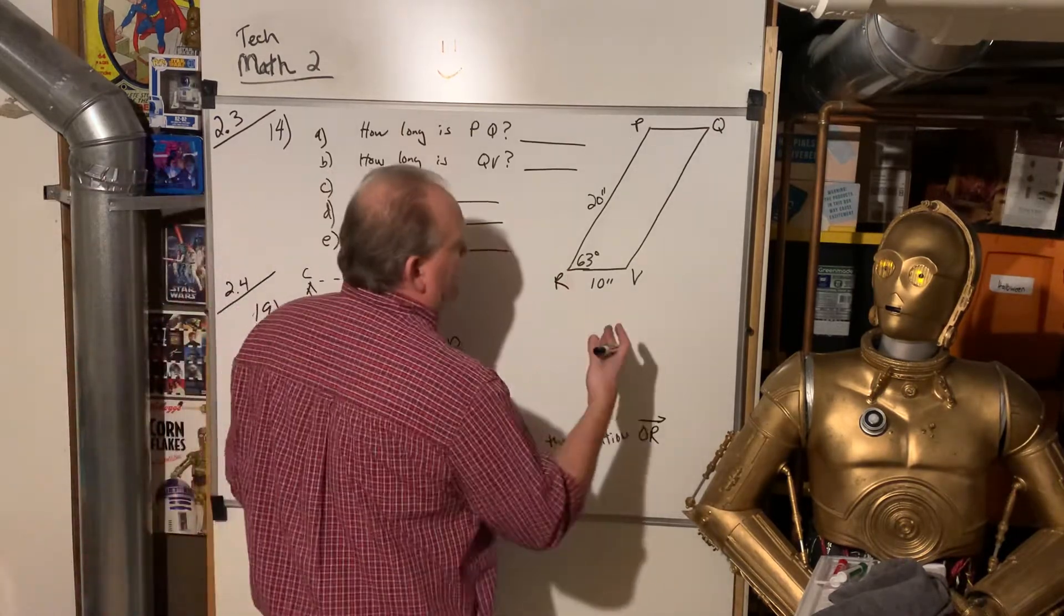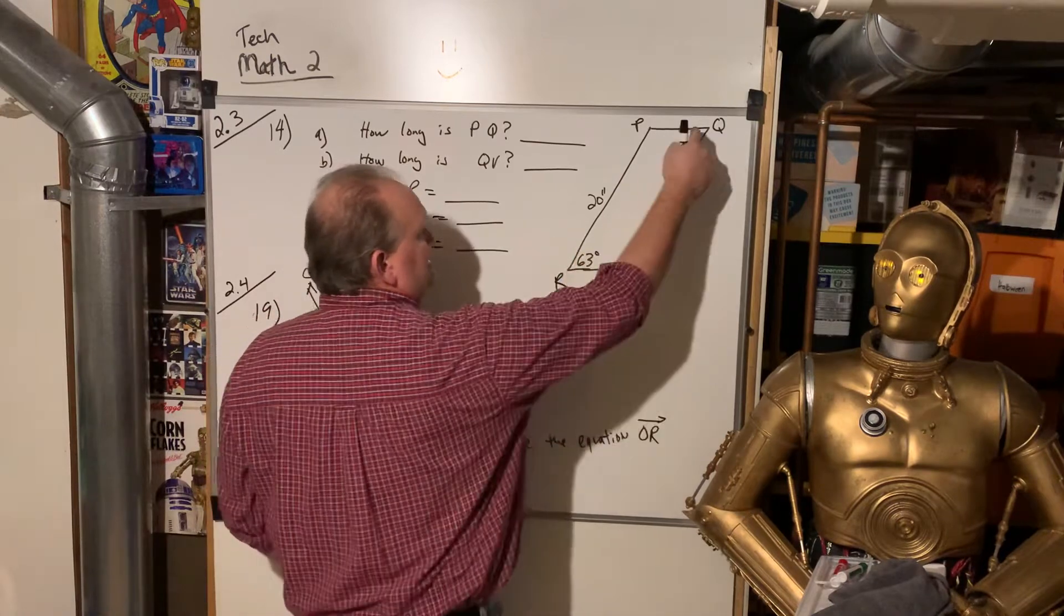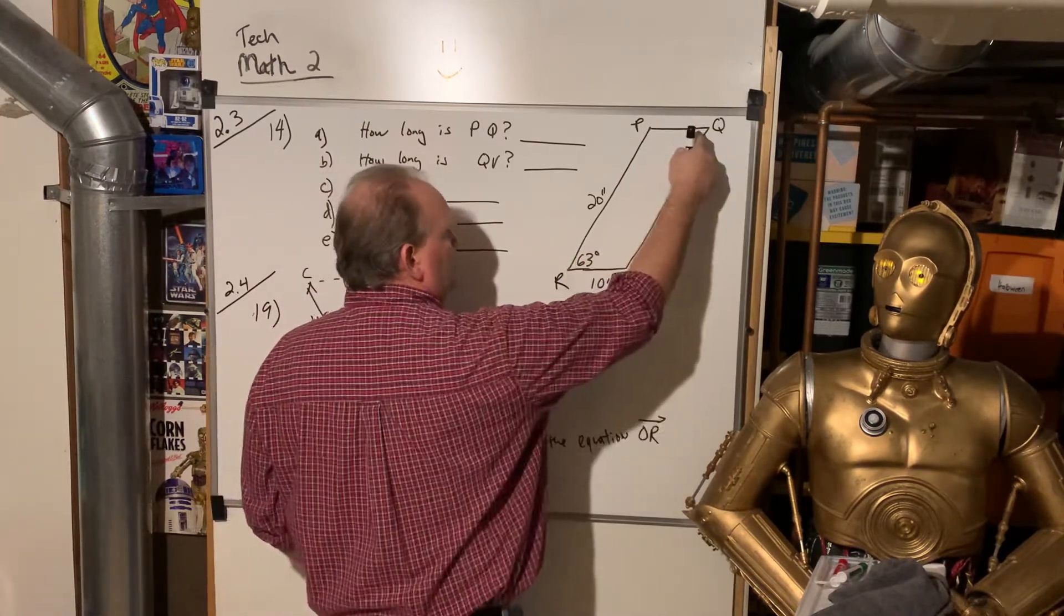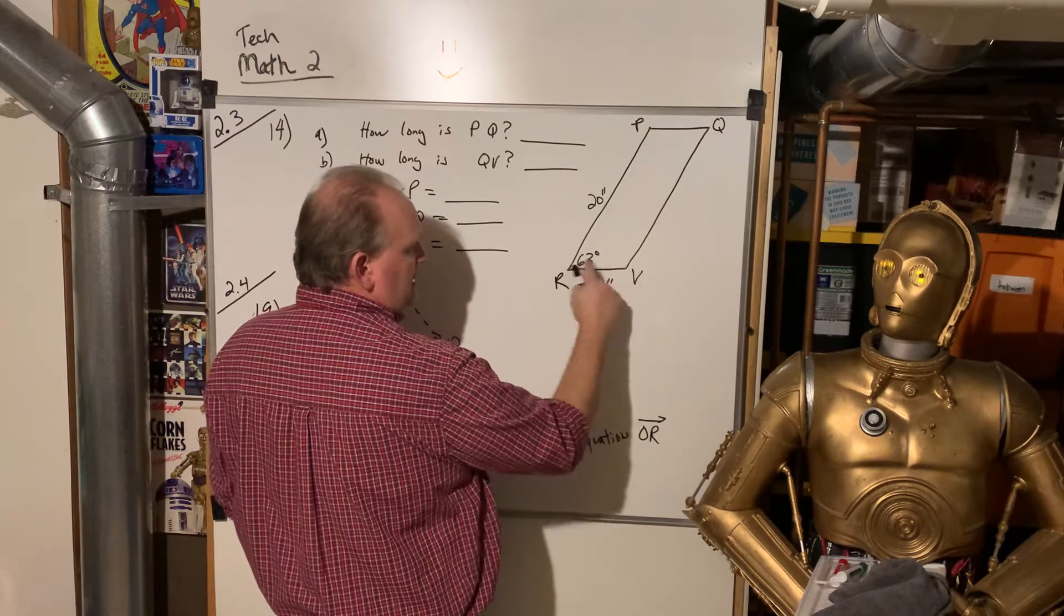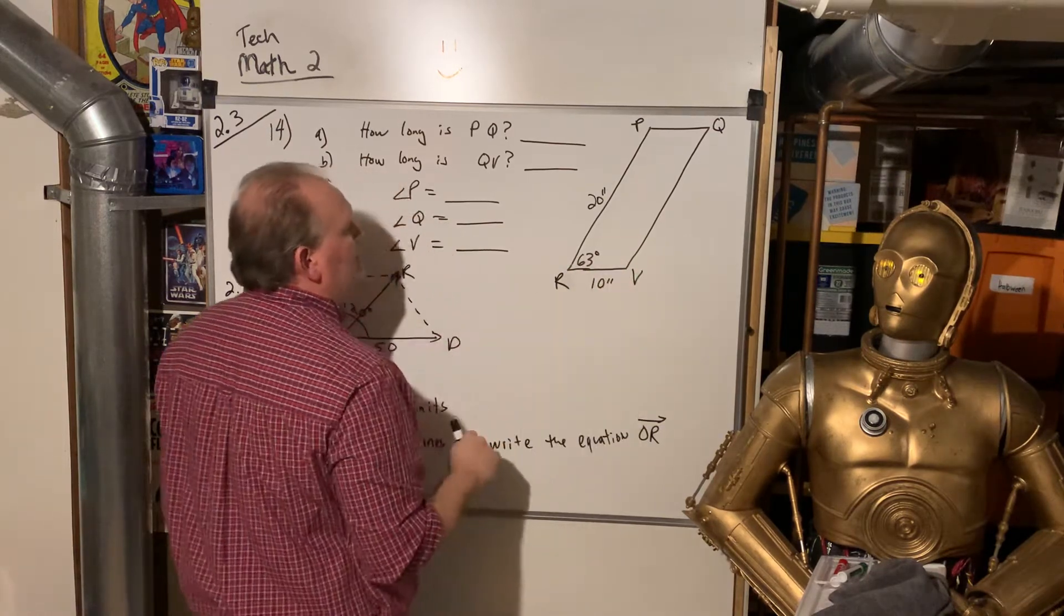Parallelograms. Opposite angles, like diagonal angles, are always the same. Adjacent angles, or ones right next to each other, always have to add up to 180.